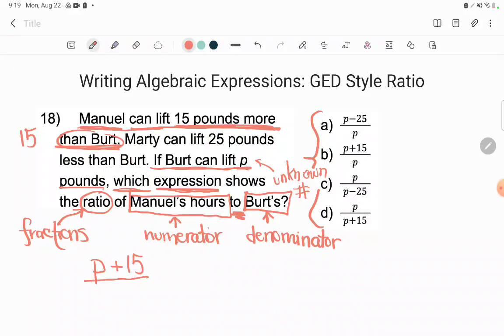And already with the way I wrote these problems, you can already see what the right answer is here. But it's not necessarily on the GED. So let's keep talking about this. But there you see, there's Manuel's hours. That's what that says. It says 15 pounds more than Burt. Starting with Burt, add on another 15. And there you go. I have 15 pounds more than Burt.